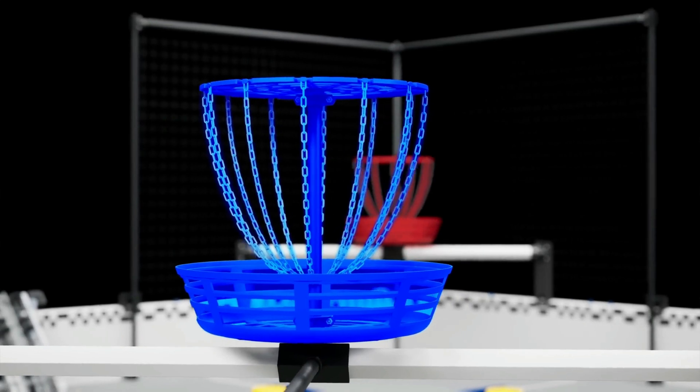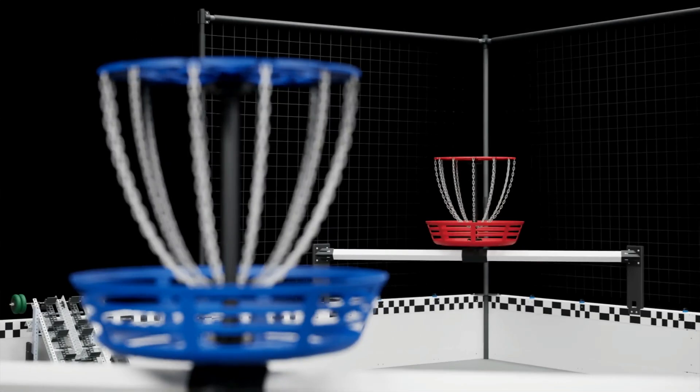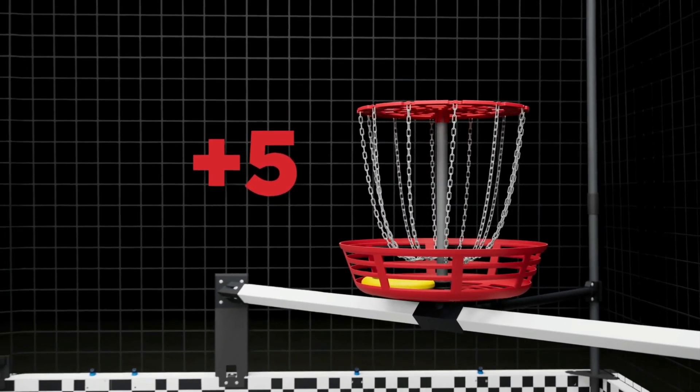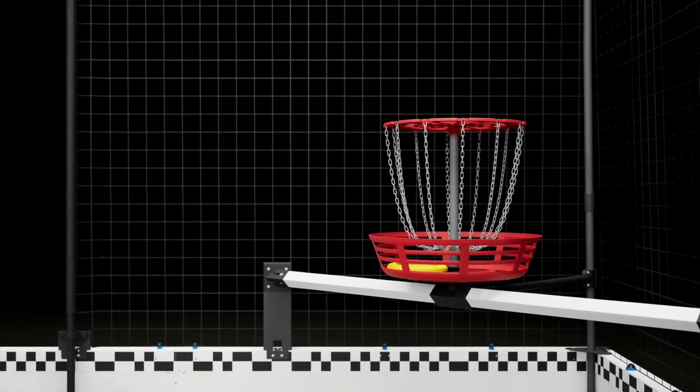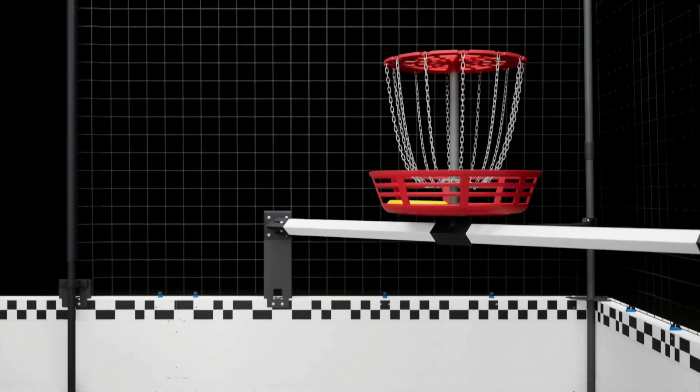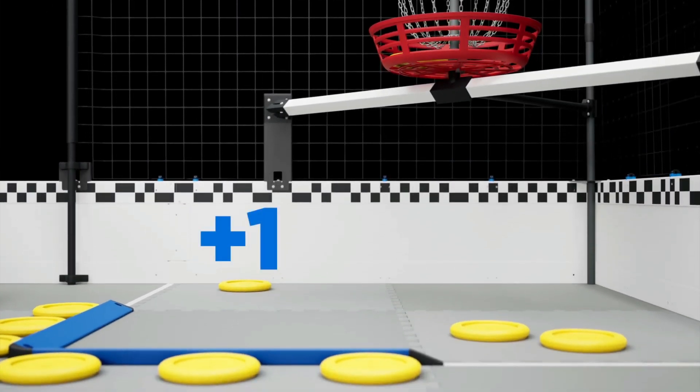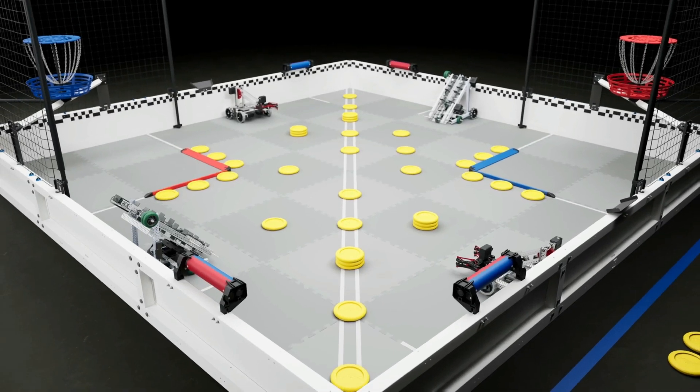Discs can be scored in the two high goals, one per alliance, at opposite corners of the field. Each disc scored in a high goal is worth five points. However, robots aiming for the high goal had better be accurate, because underneath each high goal is a one-point low goal for the opposing alliance.